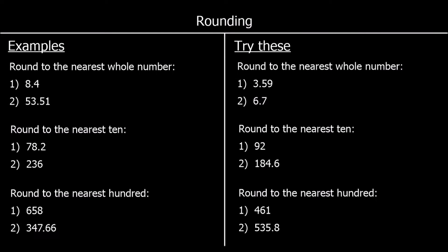Rounding. When we round a number, we are asking what is it closest to? So when we round to the nearest whole number, the question is which whole number is the number closest to? The first one says 8.4, and we want to know is it closer to 8 or is it closer to 9?